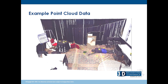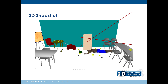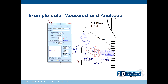This is an example of point cloud data — a mock crime scene we took in Colorado last April. With that data, we were able to create a nice 2D diagram with bullet trajectories, bodies, evidence markers, and all the furniture. And then this is a 3D snapshot of that data. Here's an example of measuring and analyzing data — a crash showing the angles used to calculate speed for momentum.